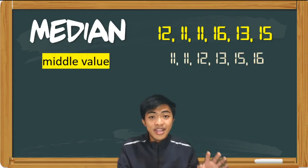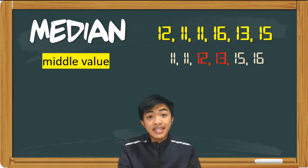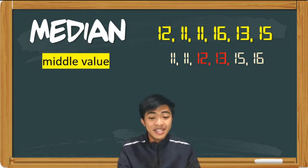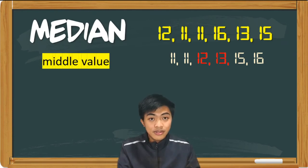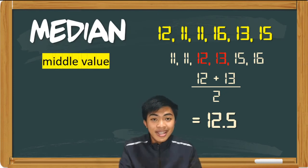So after arranging it, kukunin na natin yung middle value. Dito sa ating dataset, may dalawang middle values, and yung dalawang middle values na yun ay 12 and 13. Take note guys, dapat isa lang ang median. So to get the median, we get the mean of the two middle values. So that is 12 plus 13 divided by 2. The median is 12.5. Don't forget guys, to arrange the dataset before getting the middle value.